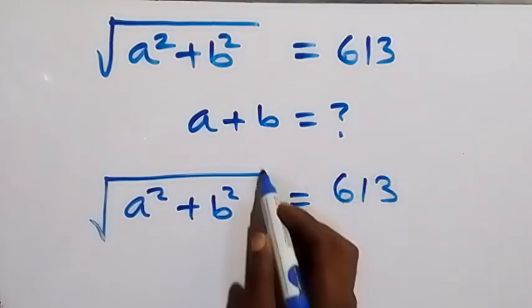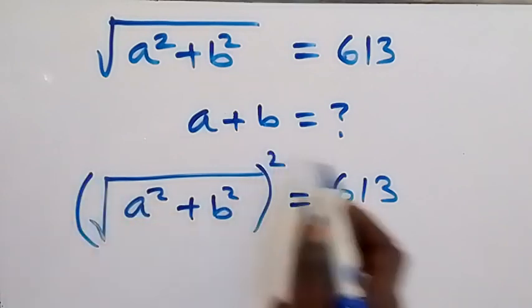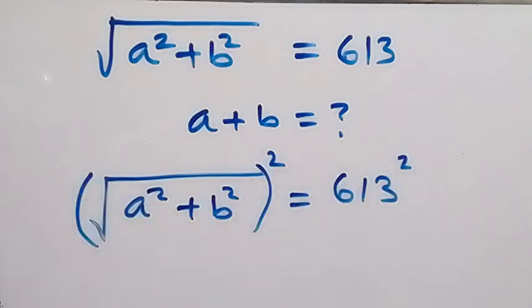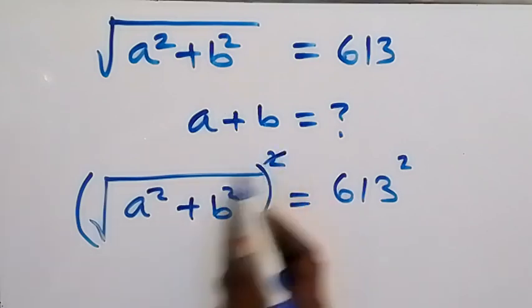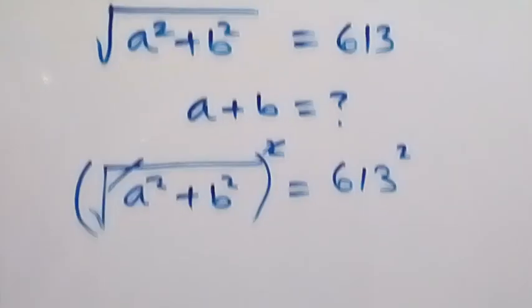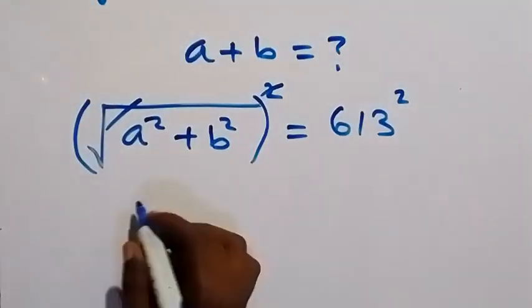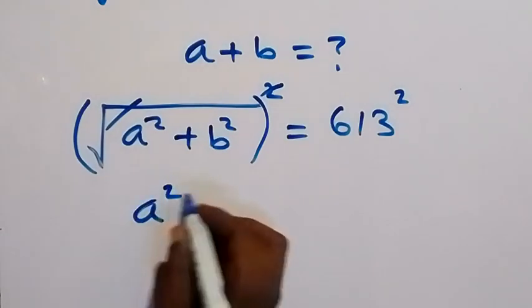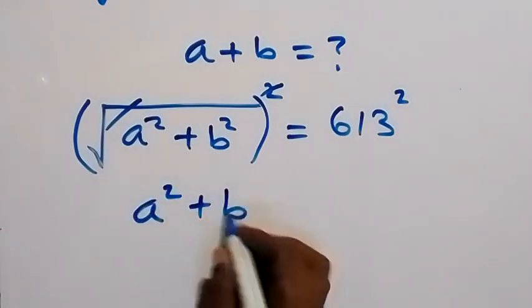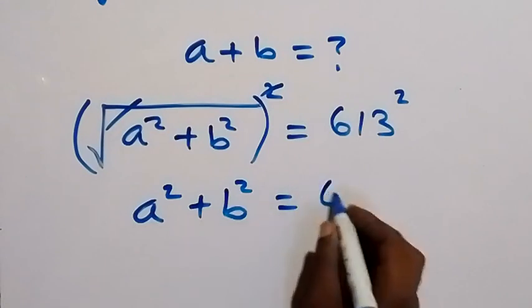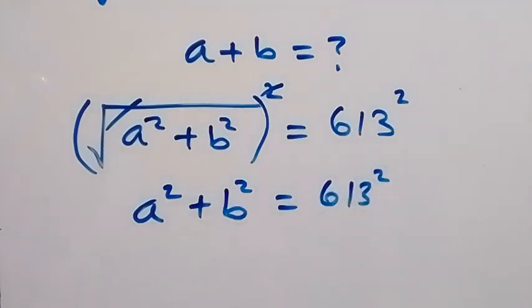From here we can square both sides to remove the square root. We square this side and also square this side. Then the square will cancel the square root and this will give us a squared plus b squared equals 613 squared. When we look at this, this is in the form of